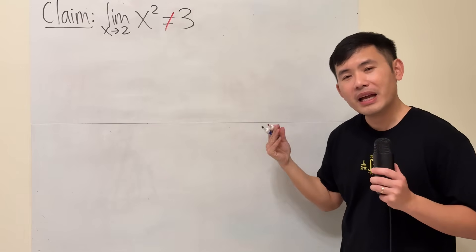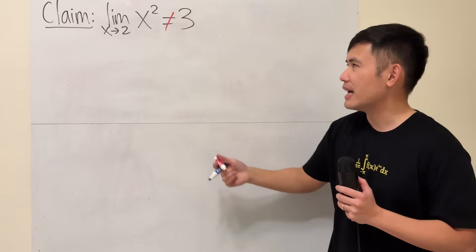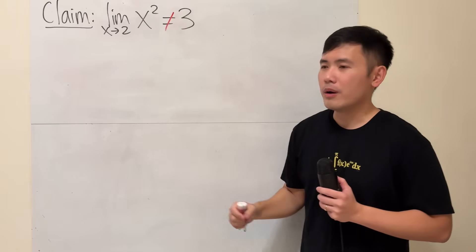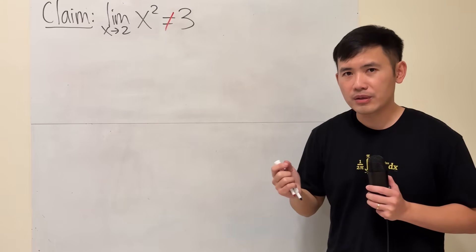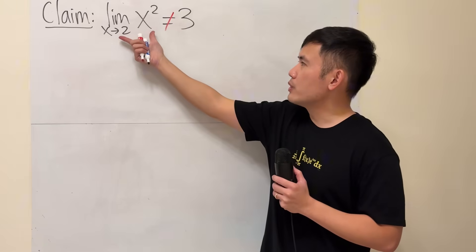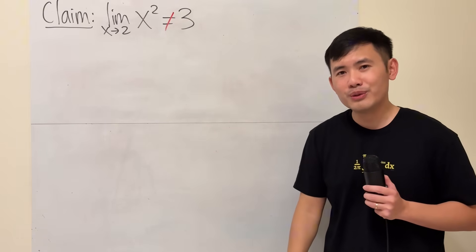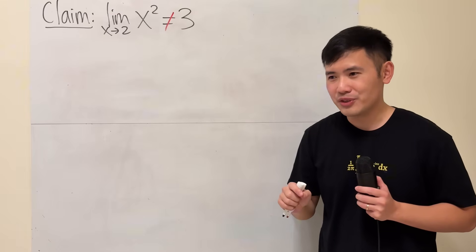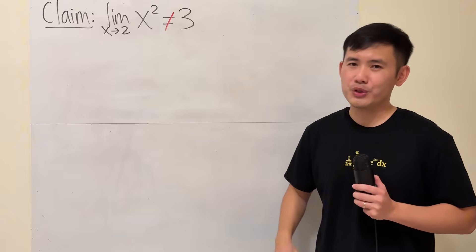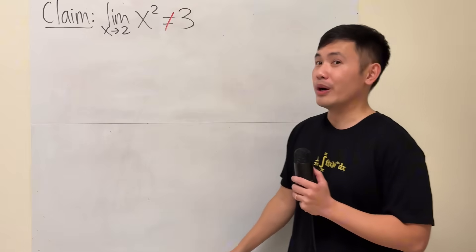How can we do this though? Last time, I already showed you guys that this limit is equal to 4 by using the epsilon delta definition. Today, when we want to show this is not equal to 3 or any other number, we will still have to use the epsilon delta definition by the negation version of that. So let's go ahead and do a quick review.